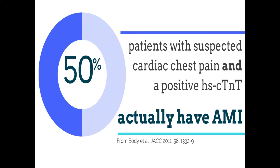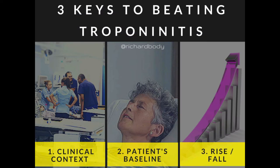Let's say we had a patient with suspected cardiac chest pain — we measure their troponin and it's positive on arrival, above 14 nanograms per litre, which is the 99th percentile upper reference limit. The chance that patient actually has an acute myocardial infarction is just 50% — one in two. You may as well flip a coin. So we do get a lot of positive results in patients who don't have an acute MI. Does that mean we need to worry about how good these tests are? Well, no — because it's about how we interpret the test. We shouldn't leap to the diagnosis of acute MI just because the troponin result is positive.